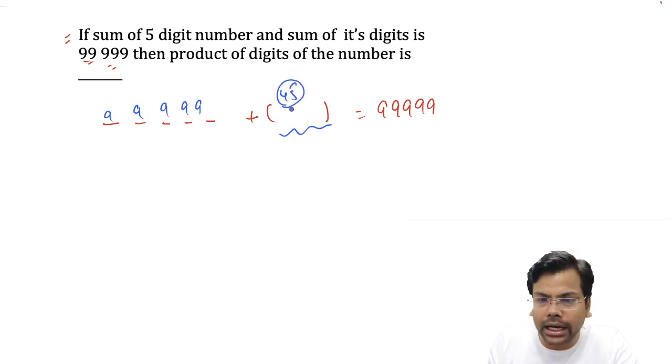We cannot get, we will not get the sum of the digits of 45. And please, this one is not a digital sum that you add it every time. This one is the sum of the digits. So the sum of the digits we should add only once, so it will be maximum 45 or it will be less than 45.